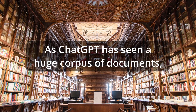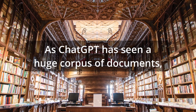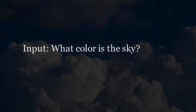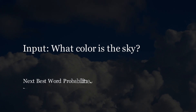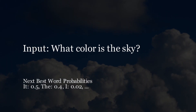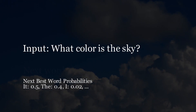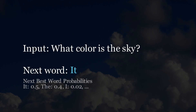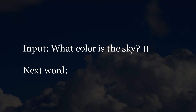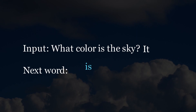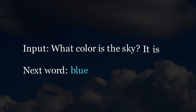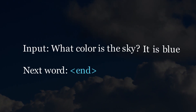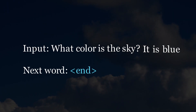As ChatGPT has seen a huge corpus of documents, it's learned which words are often used together. Based on input text, it predicts the probability that each word in its dictionary is the most appropriate next word, and selects the word with the highest probability. The selected word becomes part of the input text when considering subsequent words. The process repeats until the most appropriate next word signals when it's best to end the passage.